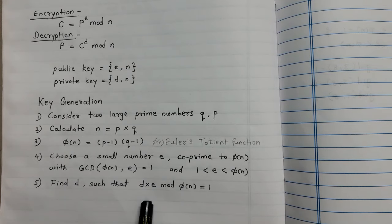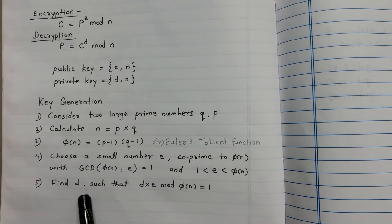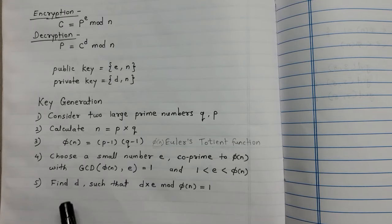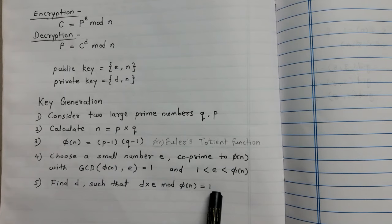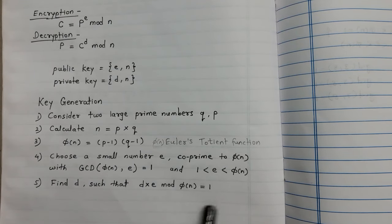The last step is to find the value of D, which is the private key. The formula for calculating D is: D × E mod Phi(N) = 1.